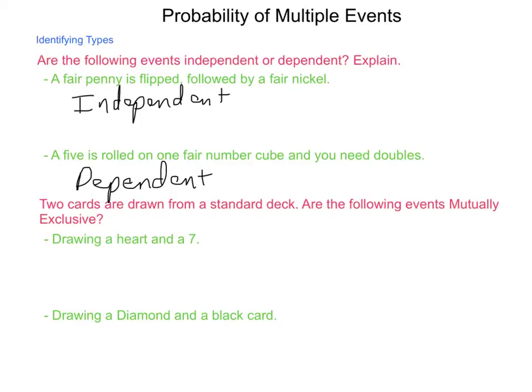Next, two cards are drawn from a standard deck. They're drawn at the same time. Are the following events mutually exclusive: drawing a heart and a 7? And the reasoning is that a seven of hearts exists, so it is possible to do both things at the same time.